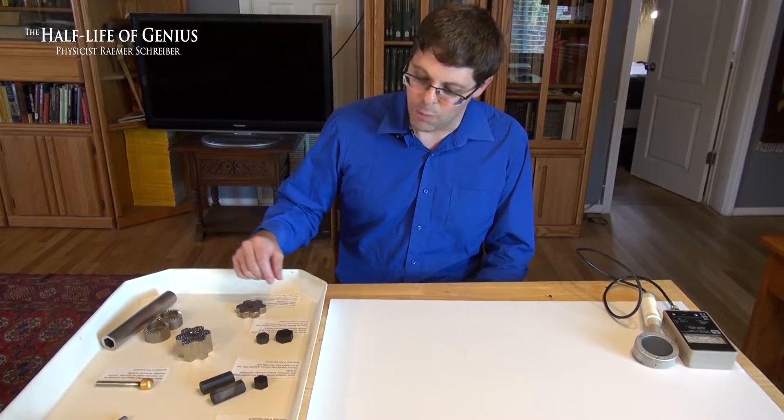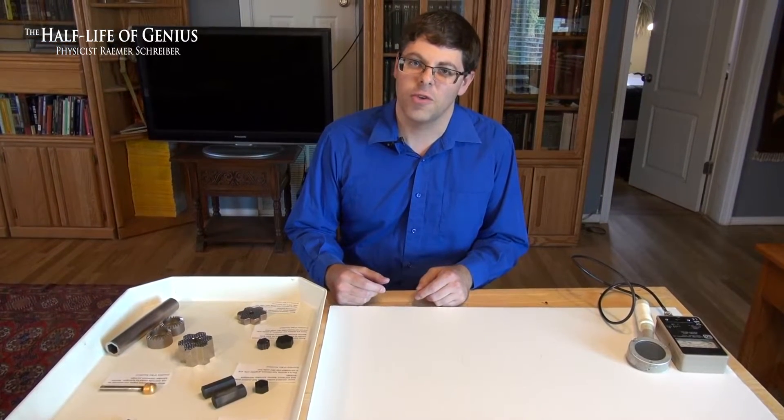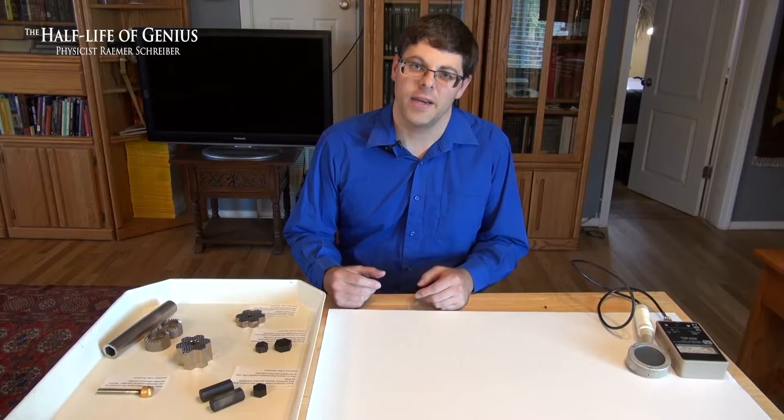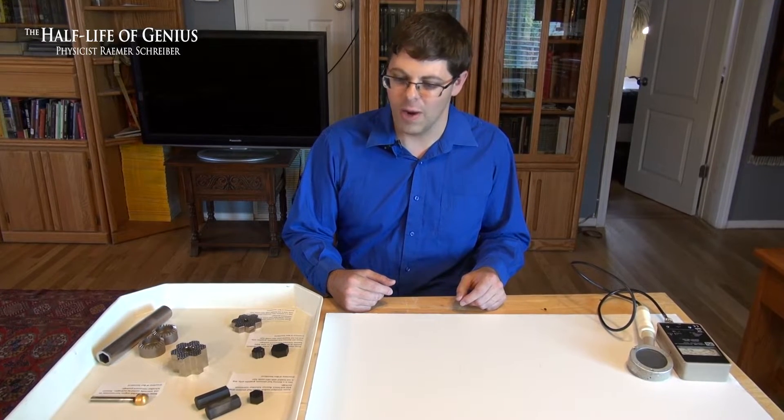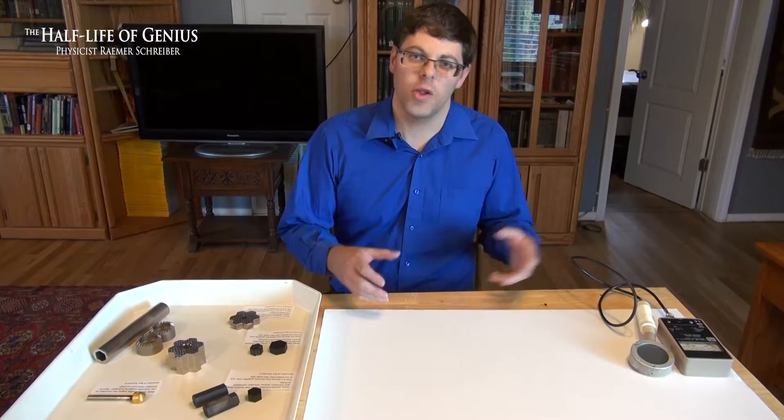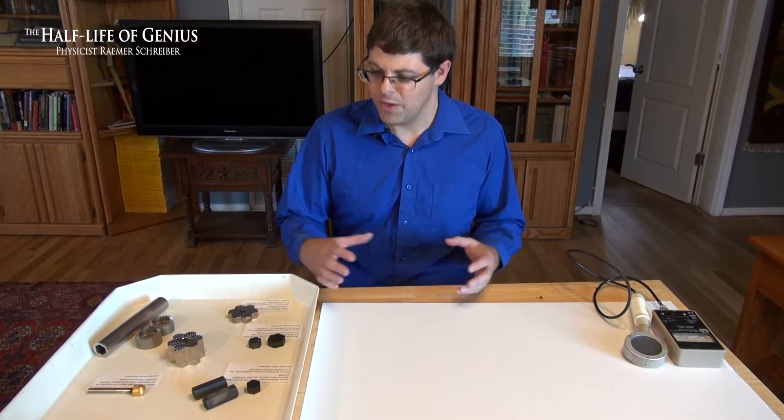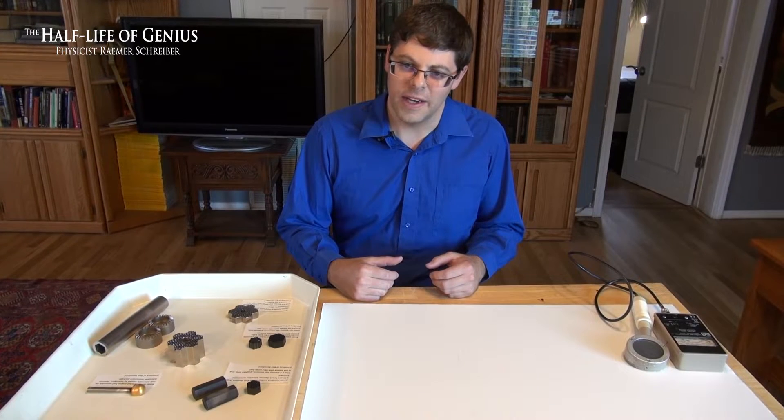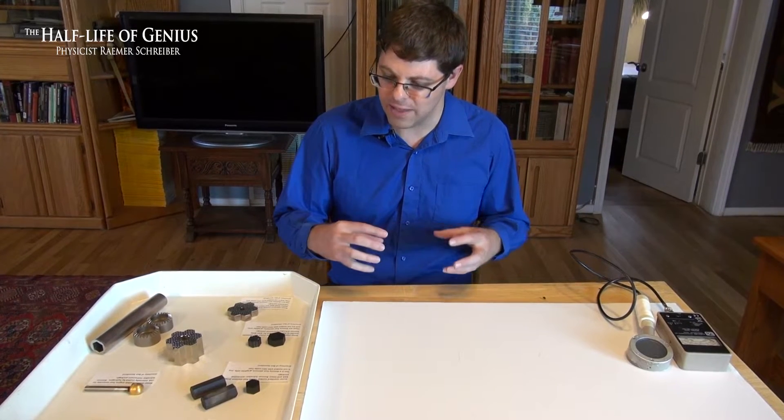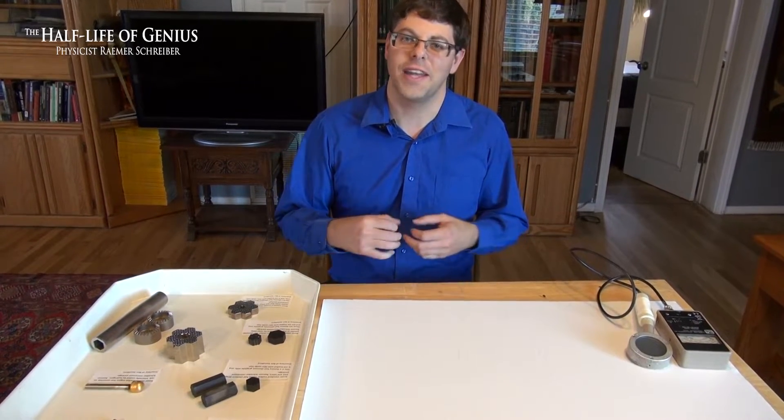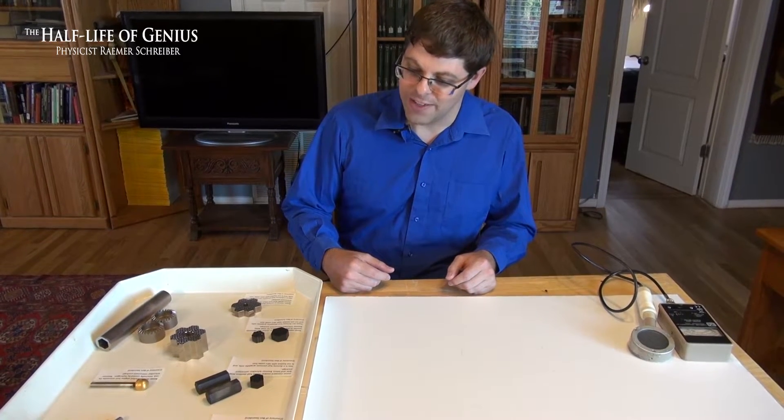Basically what these engines were is they were open Brayton cycle, hydrogen-cooled reactors that relied on highly enriched uranium, so you had the highest energy density possible, and the fuel was a refractory mixture of graphite and initially uranium oxide and later uranium carbide. They had some real problems with the technological development in that the hydrogen is very corrosive at high temperatures, and so they had to figure out how to plate these reactor components so that they would not erode in the reactor test program.